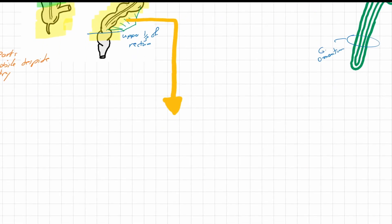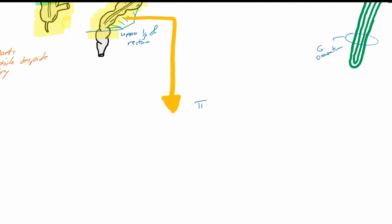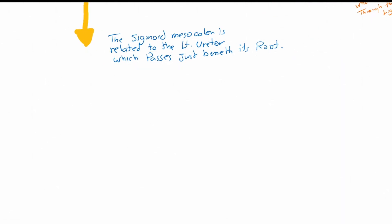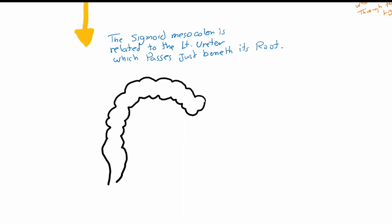Another important landmark regarding the mesocolon is the relation between the sigmoid mesocolon and the left ureter, which passes just beneath its root — meaning the root of the sigmoid mesocolon. During sigmoidectomy or left hemicolectomy, the left ureter must be demonstrated to avoid its injury.